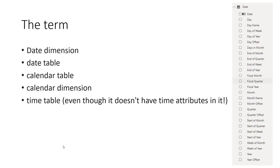The columns of a date table would have attributes of the day itself, such as year, month, quarter, half year, the week number of the year, the week number of the month, start of the year, end of the year, fiscal year, fiscal month. It can have a lot of columns like that.